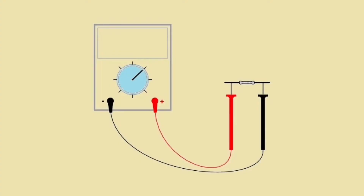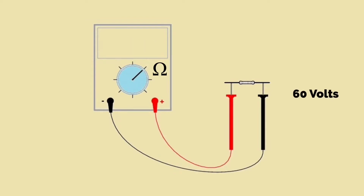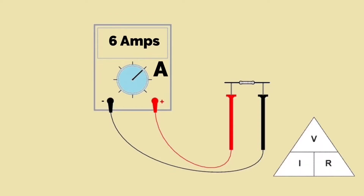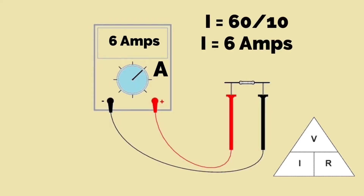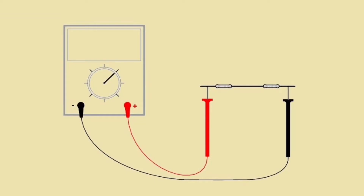In this short presentation we're going to look at series connected resistors and link it to Ohm's law. If the multimeter shown was set to measure resistance, set to ohms, and we measured the resistor to have a resistive value of 10 ohms, and then we applied a voltage across that resistor of 60 volts and reset the multimeter to measure current, current equals voltage divided by resistance — 60 volts divided by 10 ohms — showing a current of 6 amperes.